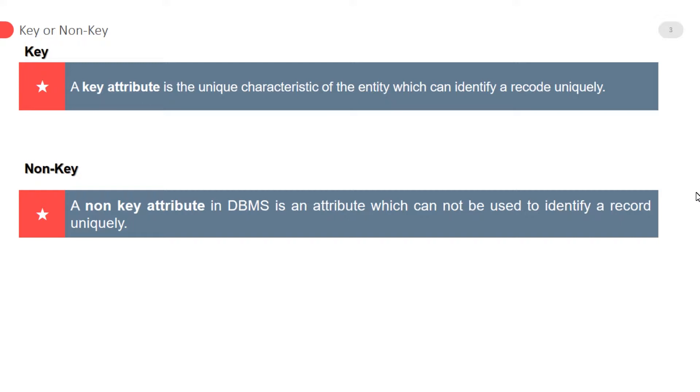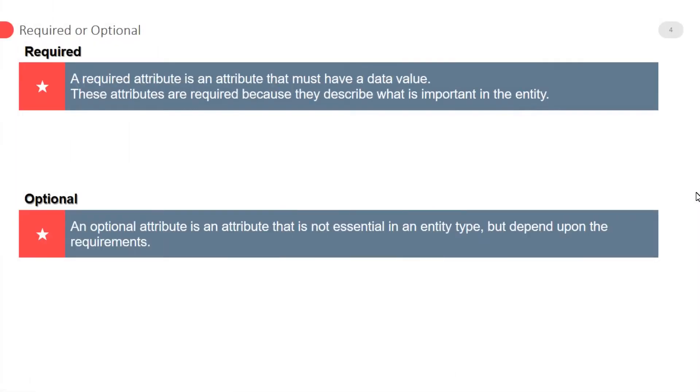Required or optional attribute. A required attribute is an attribute that must have a data value. These attributes are required because they describe what is important in the entity.